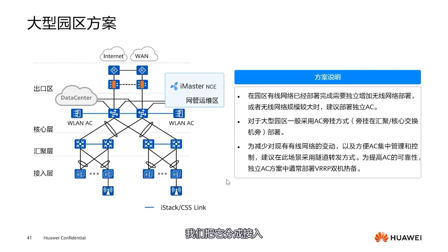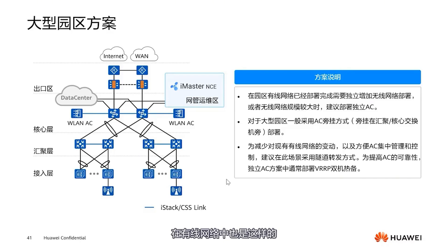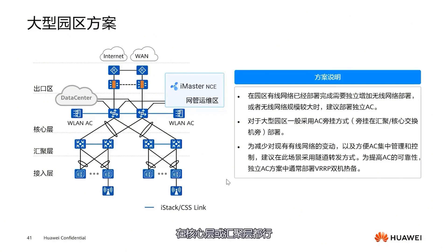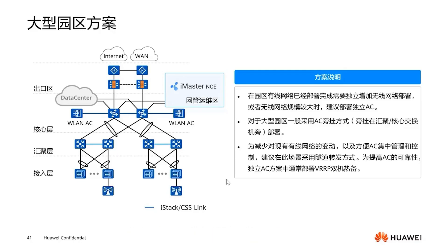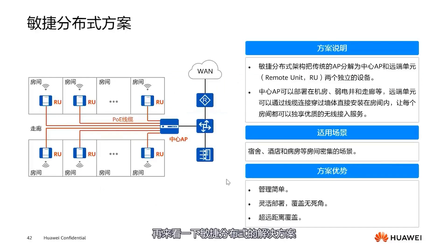We divide it into access, aggregation, core, and exit layers. This is also the case in wired networks. However, wireless networks are actually quite simple. Just hang an AC at the core or aggregation layer, then connect a few APs at the access layer, and the wireless network merges into our wired network. It's very simple.